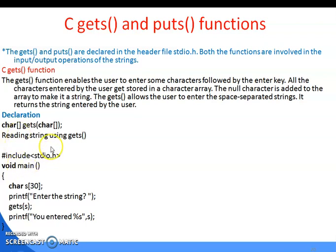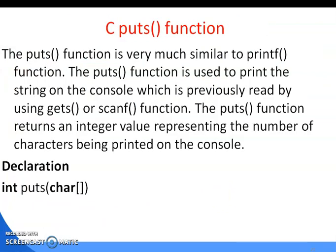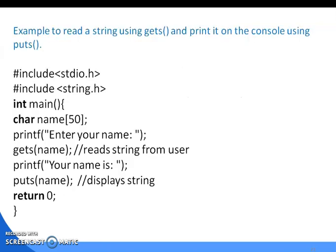The declaration for gets() is: 'char reading[30]; gets(reading);'. The puts() function is very similar to the printf function and is used to print a string on the console that was previously read using gets() or scanf(). The puts() function returns an integer representing the number of characters printed. Here is an example: use gets() to enter a string, and puts() to display that string on the console.